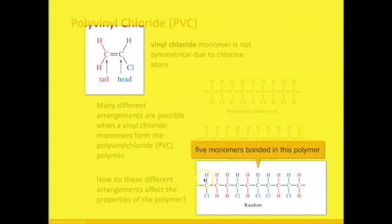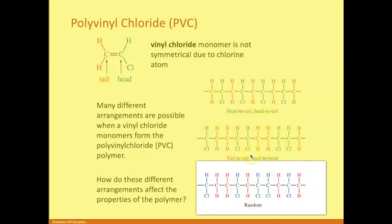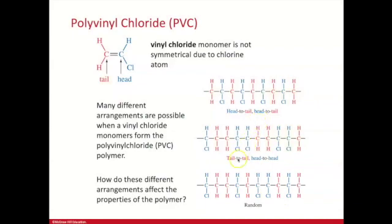The other possibility is random. Here you have a tail-to-tail (the red-to-red), and then that forces a head-to-tail here. Then this looks like a tail-to-head. So this is random, but there are three possibilities: head-to-tail, tail-to-tail/head-to-head, or random.